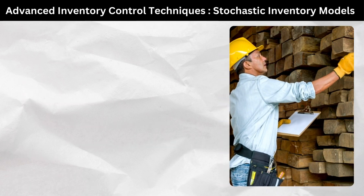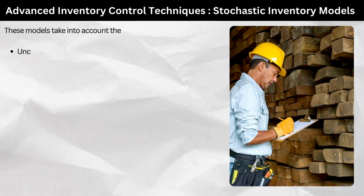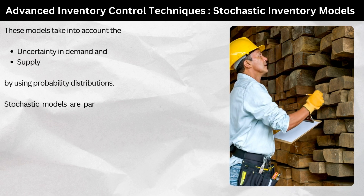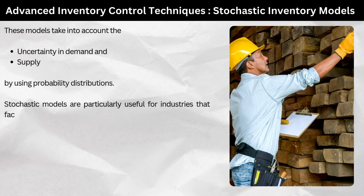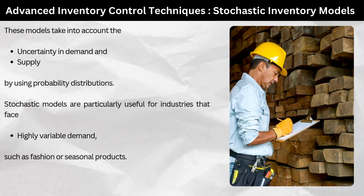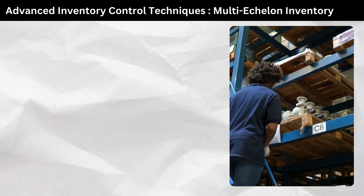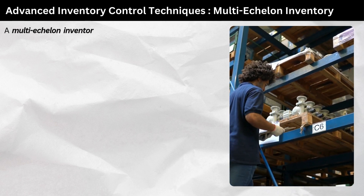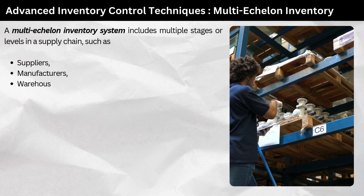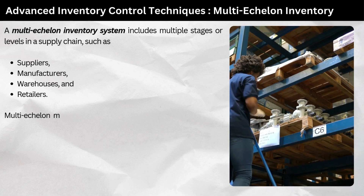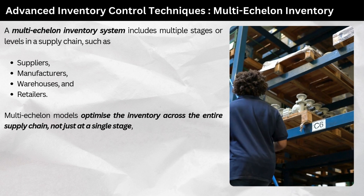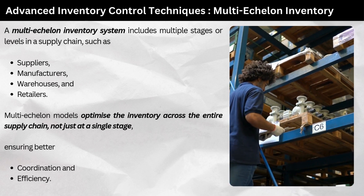2. Stochastic Inventory Models. These models take into account the uncertainty in demand and supply by using probability distributions. Stochastic models are particularly useful for industries that face highly variable demand, such as fashion or seasonal products. 3. Multi-echelon Inventory Models. A multi-echelon inventory system includes multiple stages or levels in a supply chain, such as suppliers, manufacturers, warehouses, and retailers. Multi-echelon models optimize inventory across the entire supply chain, not just at a single stage, ensuring better coordination and efficiency.